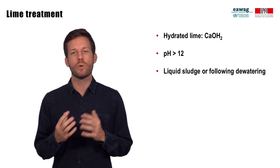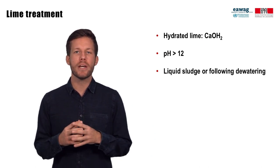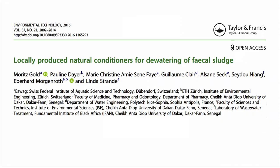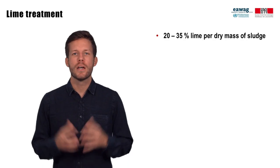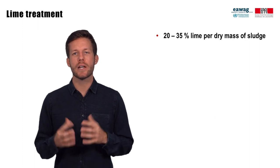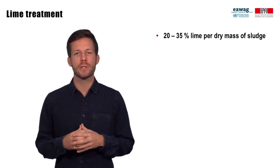Lime can be added both to liquid sludge and to sludge following dewatering. Addition of lime to more liquid fecal sludge has the added benefit of improving solid-liquid separation processes. During laboratory research conducted with research partners in Dakar, lime improved dewatering by 90% to 95% compared to an untreated control without lime. This can reduce the time and space required for dewatering, for example on unplanted drying beds.